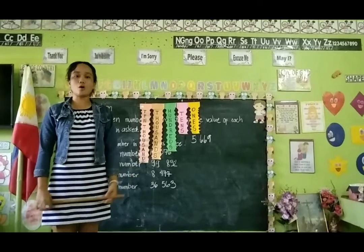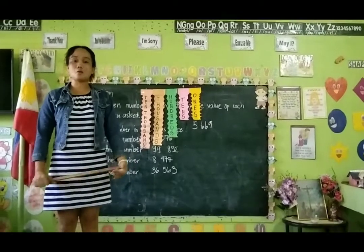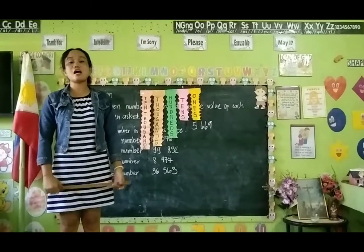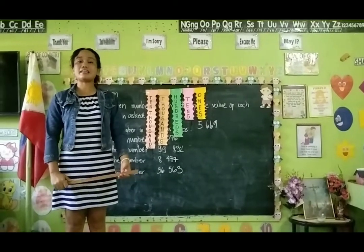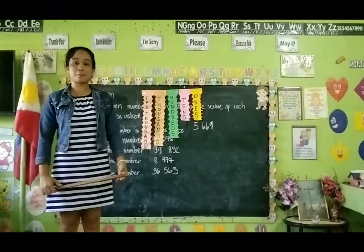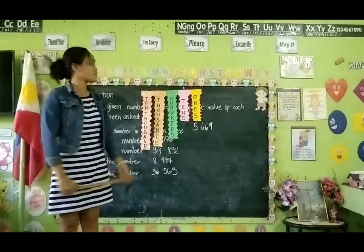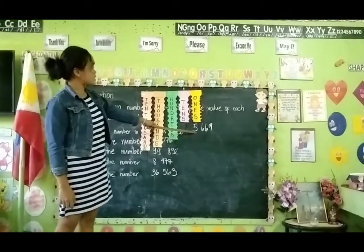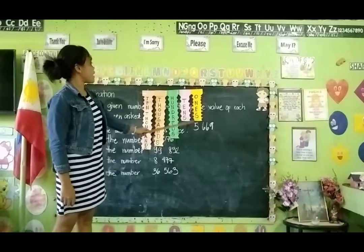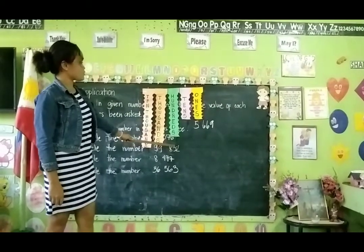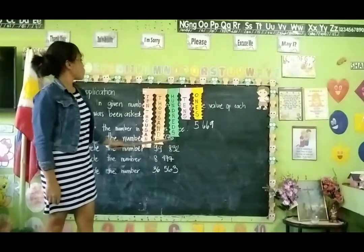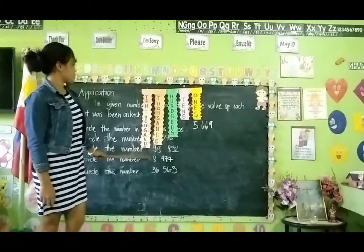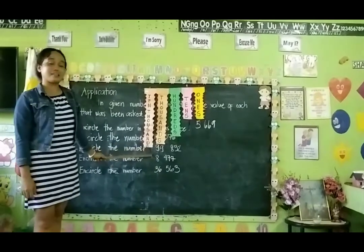The place value of each digit of a number depends upon its position in the place value chart. The place value increases 10 times as we move from the right to the left. The first spot is for ones, the second spot is for tens, the third spot is for hundreds, the fourth spot is for thousands, and the fifth spot is for ten thousands.